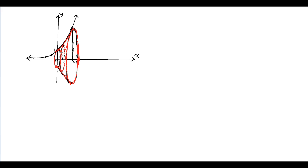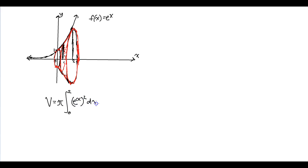It's good to visualize how the solid will actually look like if you want to go about finding volumes of these. So we can use the disk method. Volume equals π times the integral from 0 to 2 of our radius. It's helpful to think of this as the radius of our disk. The radius is equal to f(x), and we defined f(x) equals e to the x, so this is e to the x squared times dx.